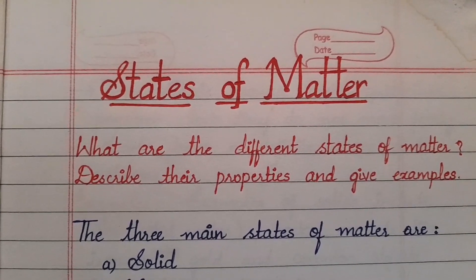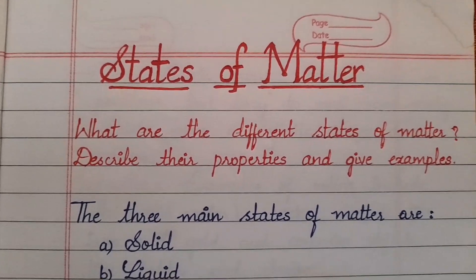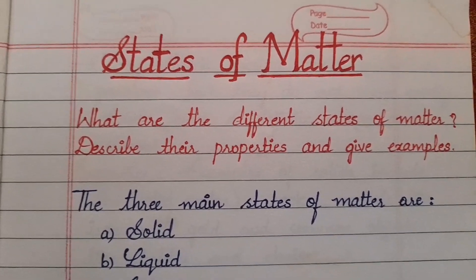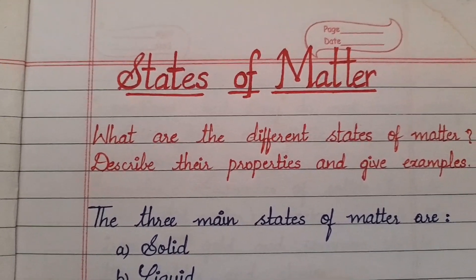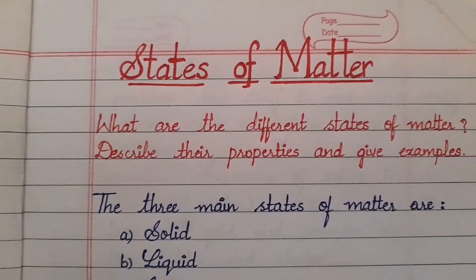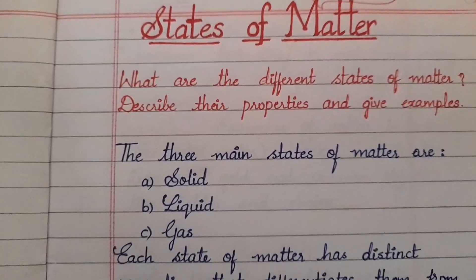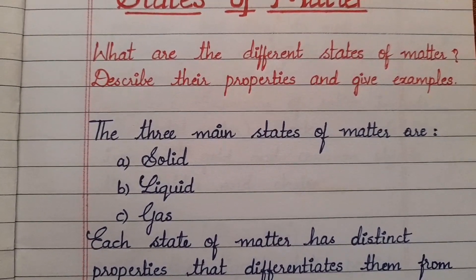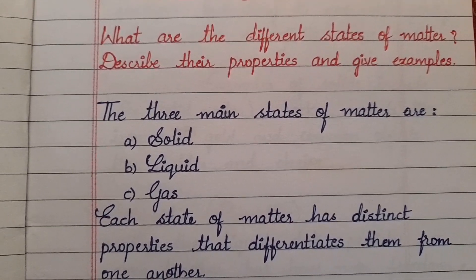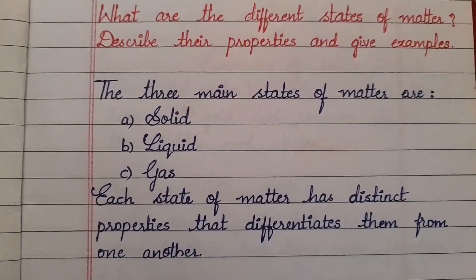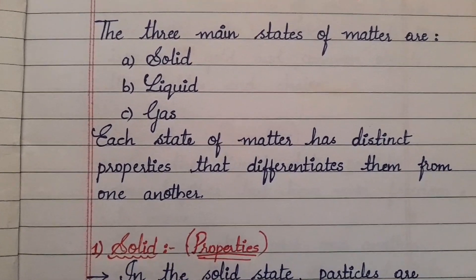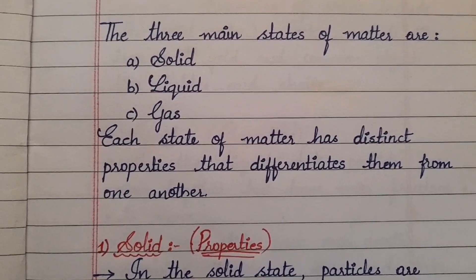The question is: what are the different states of matter, describe their properties, and give examples. We have three main states of matter and they are solid, liquid, and gas. Each state of matter has distinct properties that differentiate one from another. So let us discuss one by one.